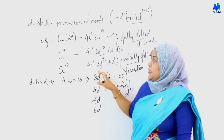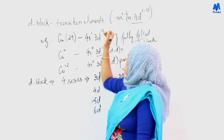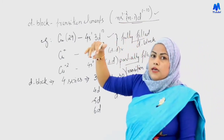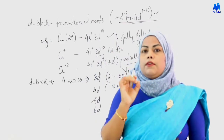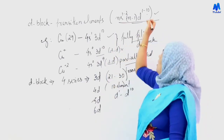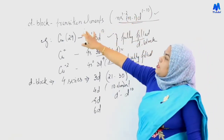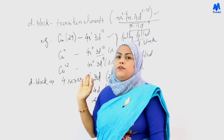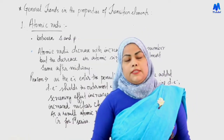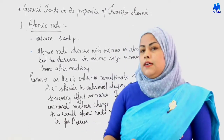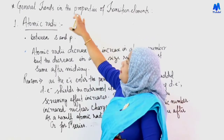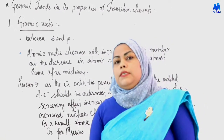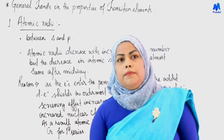If the d orbital is partially filled, for example Cu²⁺ in the +2 oxidation state, the compound will be colored. The key difference between D block and transition elements lies in the electronic configuration: D block is d¹ to d¹⁰, while transition elements require (n-1)d¹ to d⁹.